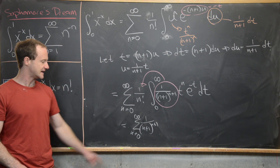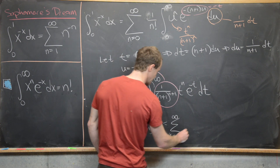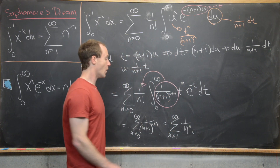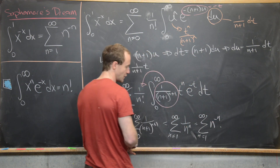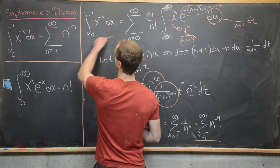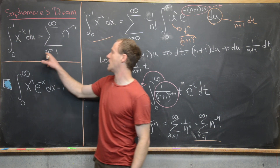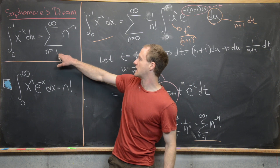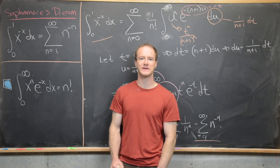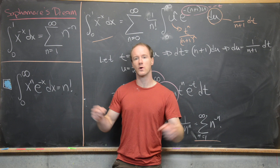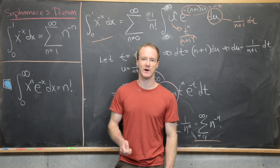Re-indexing to start at 1 instead of 0, we get the sum from n equals 1 to infinity of 1 over n to the n, or equivalently, the sum from n equals 1 to infinity of n to the minus n. So we have achieved this surprising formula: the integral of x to the minus x from 0 to 1 equals the sum from n equals 1 to infinity of n to the minus n. That is the sophomore's dream. Maybe before we stop — what do you think the junior's dream, or the senior's dream, or the first-year graduate student's dream would be? Those are pretty interesting questions, and that's a good place to stop.